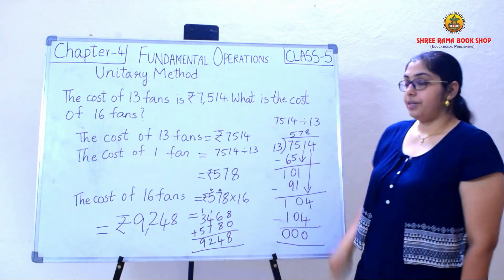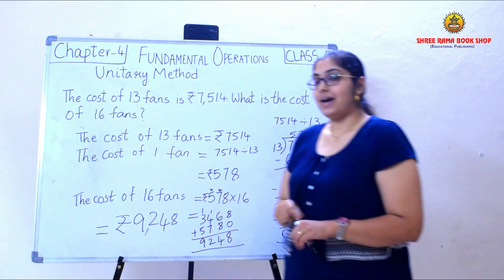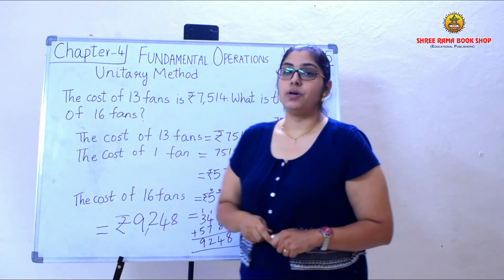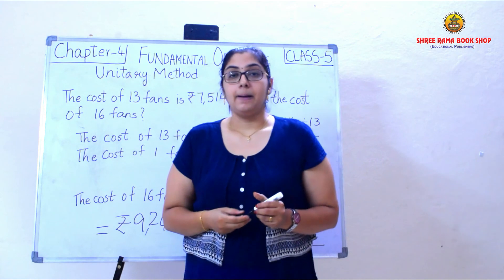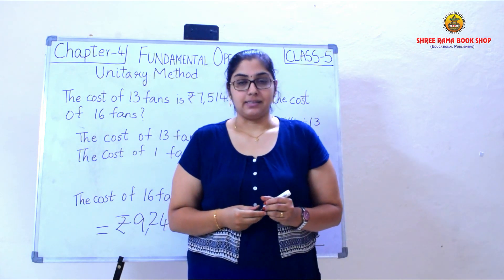So when the cost of 13 fans is Rs. 7,514, I found the cost of 1 fan as Rs. 578, and from that the cost of 16 fans is Rs. 9,248. This is the Unitary Method, children. You have an exercise corresponding to this in your textbook — please do practice it.